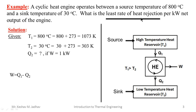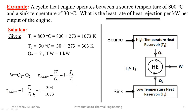The least rate of heat rejection means we need to calculate the lowest value of Q2. For a Carnot or reversible heat engine, Q2 will be lowest, meaning efficiency will be higher. By assuming this heat engine is a reversible heat engine, we can write the efficiency formula as W upon Q1 which equals 1 minus T2 upon T1. With T1 and T2 given, we calculate efficiency as 0.7176, or 71.76 percent.